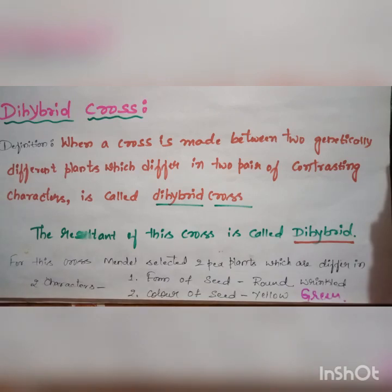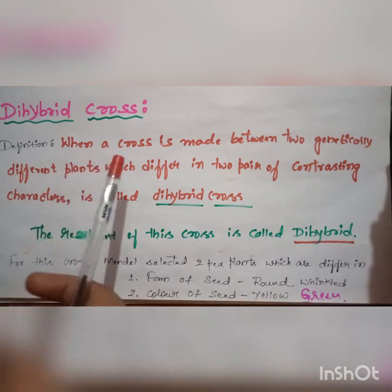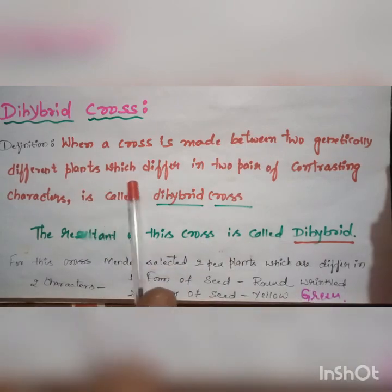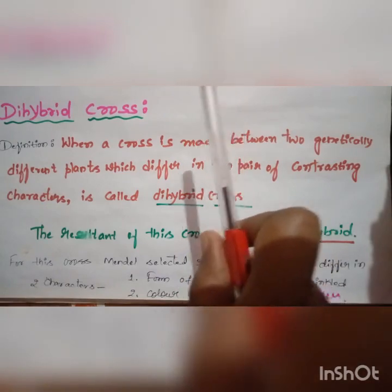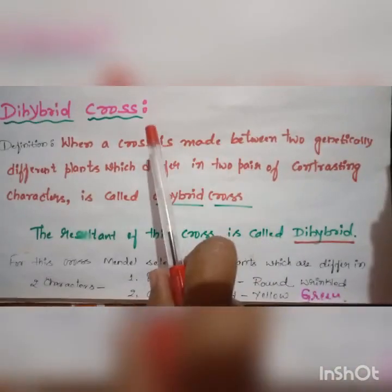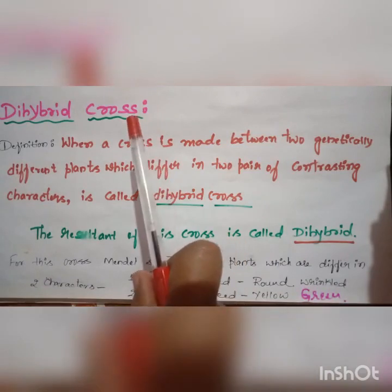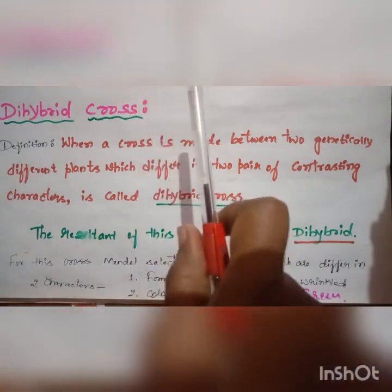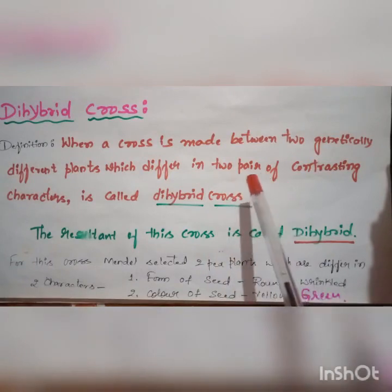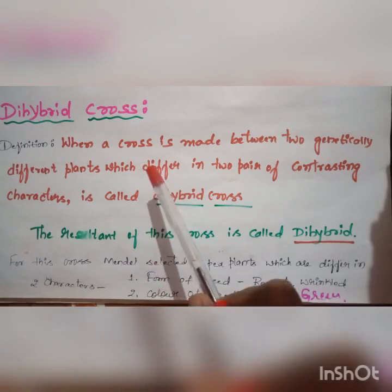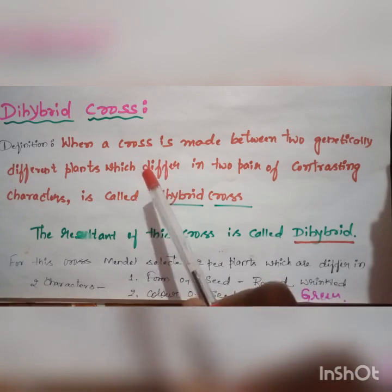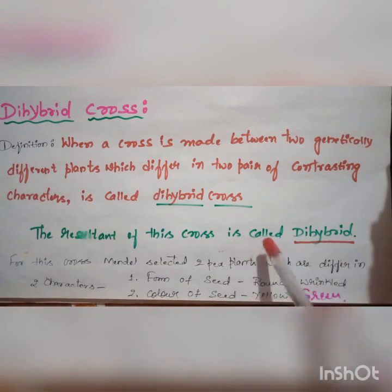Before going to know about dihybrid cross in detail, let us know what is dihybrid cross. When a cross is made between two genetically different plants which differ in two pairs of contrasting characters, it is called dihybrid cross. In monohybrid cross, the two plants involved have all similar characters except one character. In the same way, two characters differ in case of dihybrid cross, and the resultant of this cross is called a dihybrid.